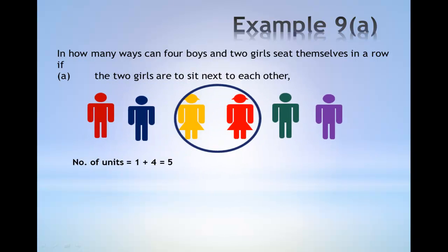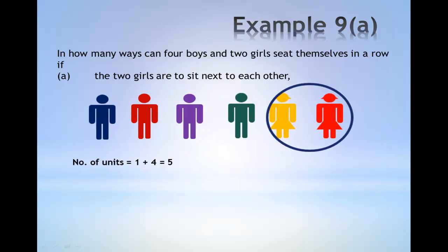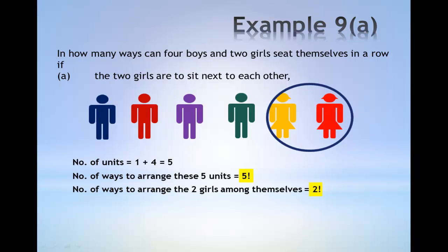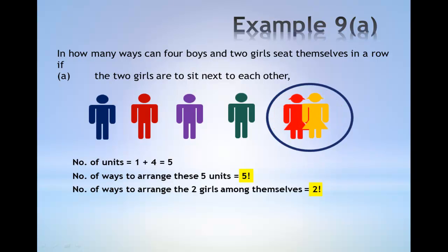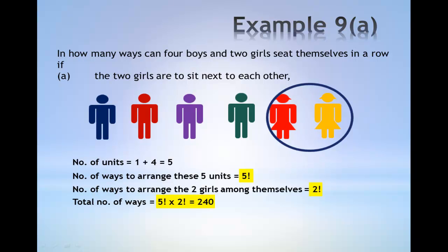This is one way to permute the five units, and another way to permute the five units. The number of ways to arrange these five units is given by five factorial. The number of ways to arrange the two girls among themselves is two factorial. The total number of ways is therefore given by five factorial multiplied by two factorial, which gives 240.